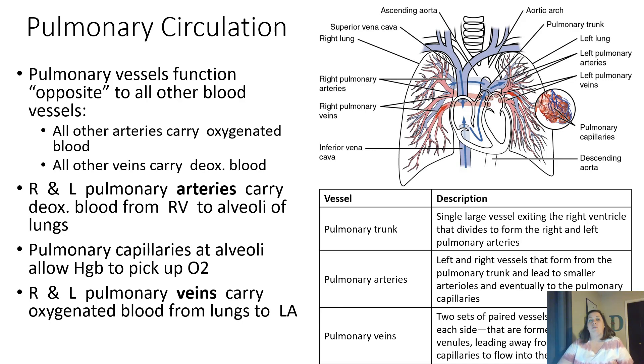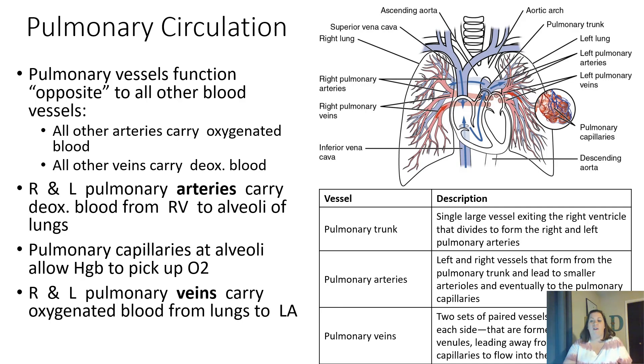The pulmonary capillaries are where the exchange happens. Oxygen moves from the lungs to the blood, and carbon dioxide moves from the blood to the lungs. The right and left pulmonary veins carry the oxygenated blood back to the left atria of the heart. There's a picture here as well as a description to help with a chart to go over the pulmonary circulation.